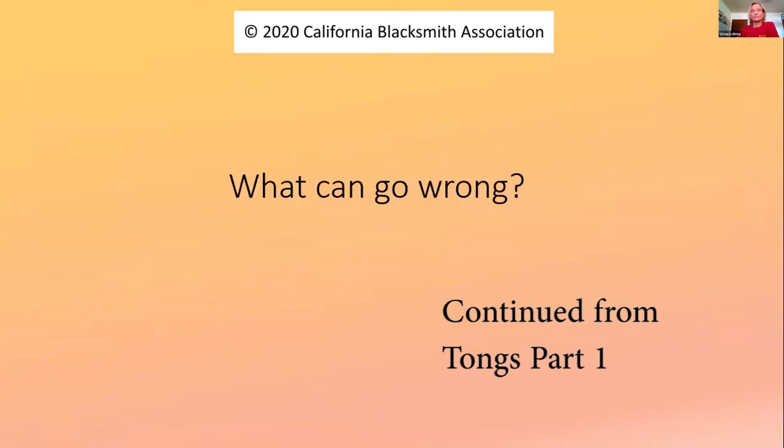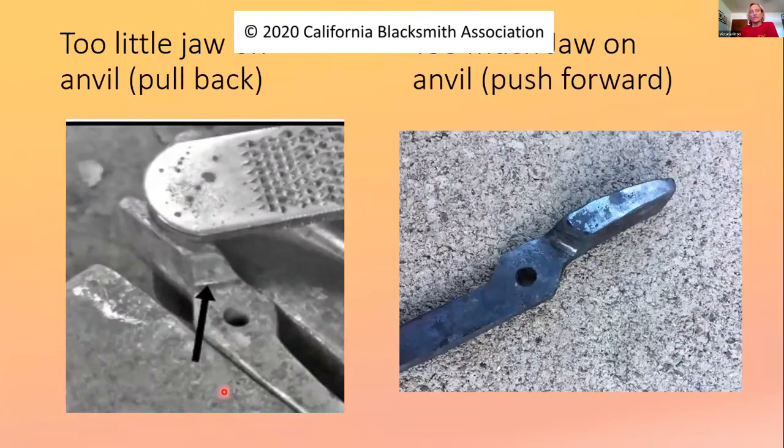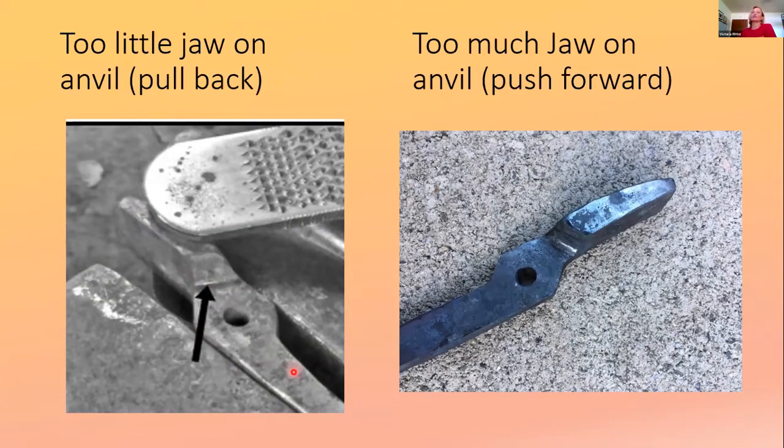What can go wrong and how do you prevent it or recognize what happened? If you end up filing to get them to fit, you had too little of the jaw on the anvil and it would be necessary for you to pull that back a little bit.